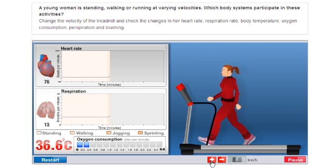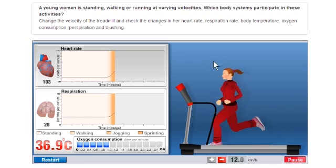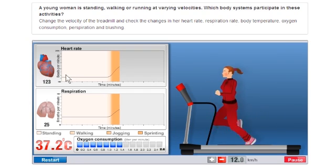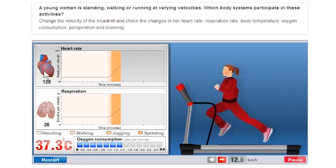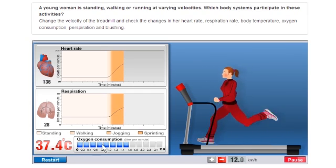While she is running, we can follow changes in her body, such as sweating and her face turning red. We can also follow the internal invisible changes in her body. What happens to her heart rate, respiration rate, oxygen consumption and the body's temperature?